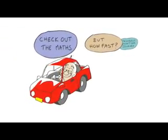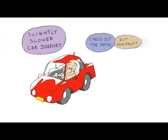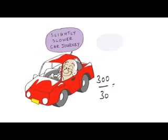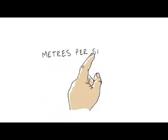If the car covered the same distance in 30 seconds, it would be going more slowly. And in that case, the speed would be 300 divided by 30, which is 10 metres per second. So speed is distance divided by time, as in metres per second or miles per hour.